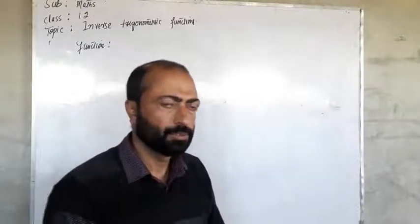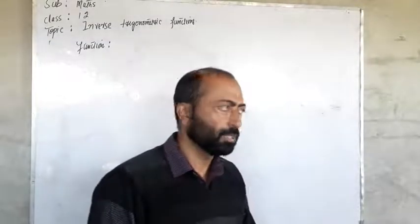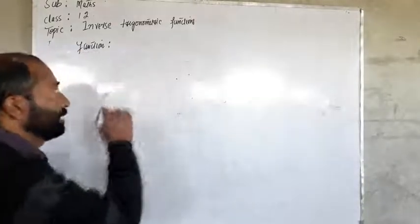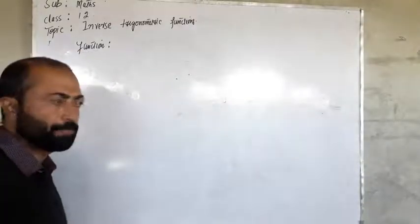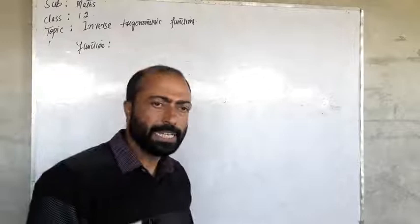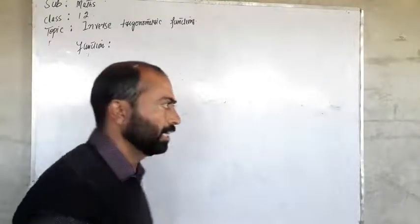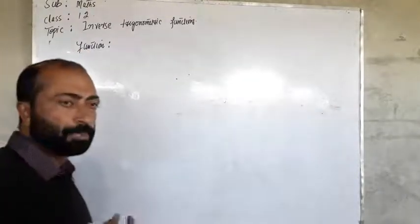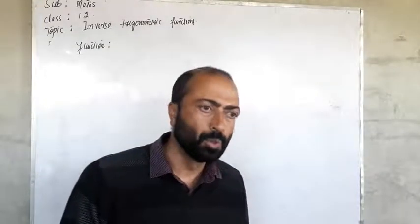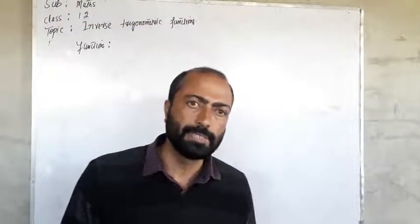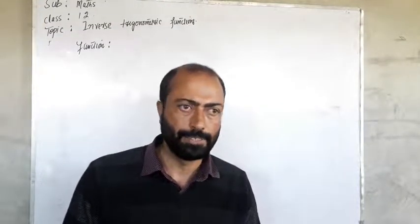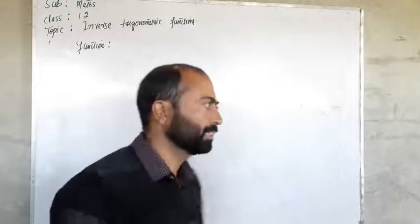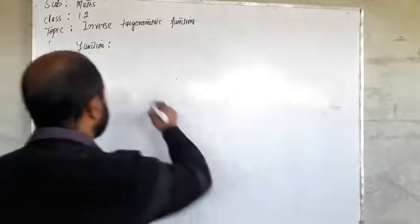Dear viewers, today's lecture is for class 12 mathematics and the topic is inverse trigonometric functions. Let me briefly explain here a function. As you know, a function is a special type of relation in which no two ordered pairs have the same first entry. Let's have a clear idea for this function by means of an arrow diagram.